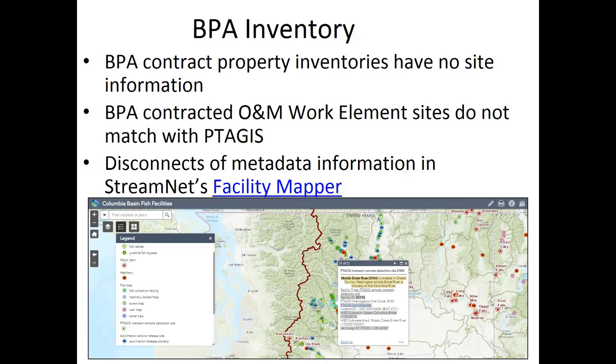So how do people find the information — whether it's the PIT array, whether it's the temperature, water, or the flow gauge that's associated with these things — where do you go to get the information?